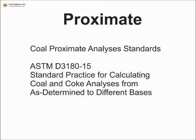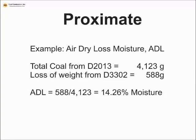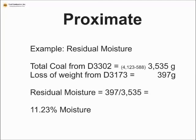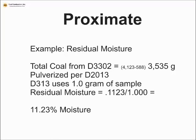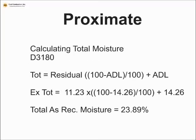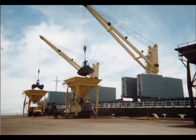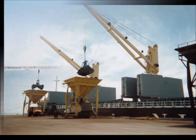We've got to convert these measurements back so we can use them on an as-received basis. For example, we take about 4,000 grams of coal, put it in the air dry oven, and find it's lost about 14.26% — that's the air dry loss. If we heat it above 100°C, some inside moisture comes off, measured at 11.3%. After pulverization we use a one gram sample. ASTM D3180 tells us how to calculate total moisture: if residual moisture is 11% and surface moisture is 14%, you end up with about 24% total moisture.